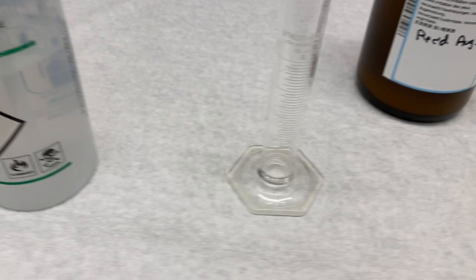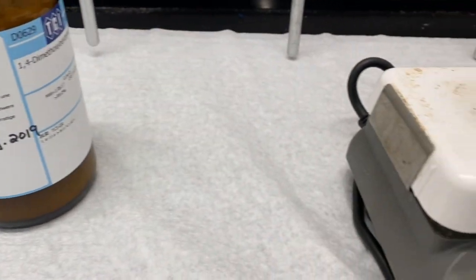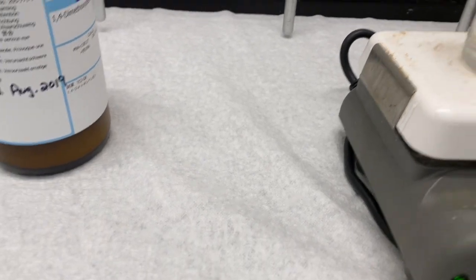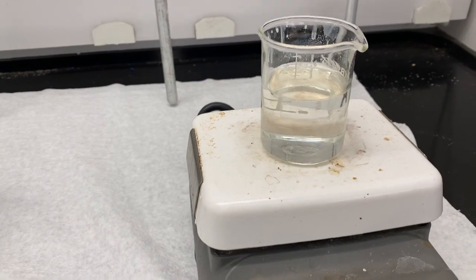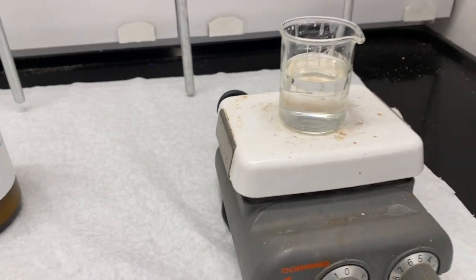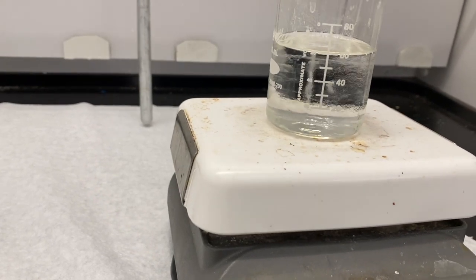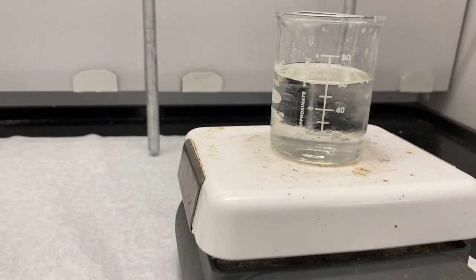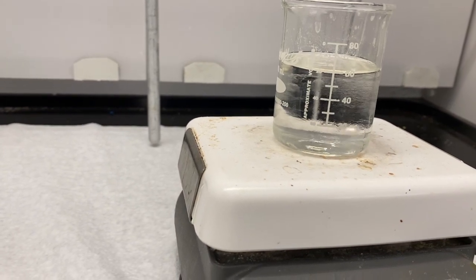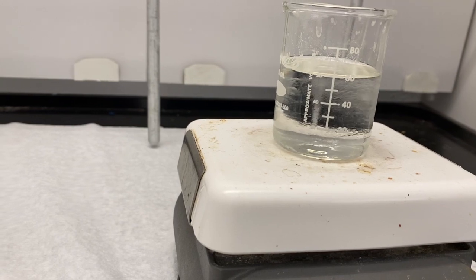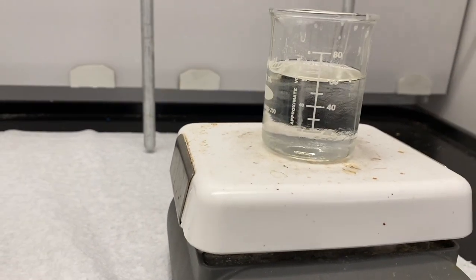And so we're going to put this onto the hot plate. And we're going to recrystallize this. We're going to boil this solution until we've got about 15 milliliters left. And then we'll let this solution cool slowly by removing it from the hot plate to hopefully produce nice crystals.